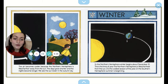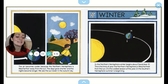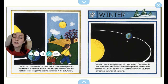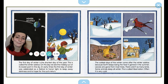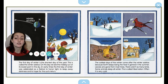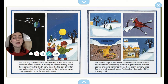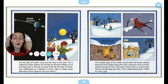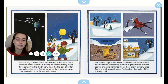Winter. In the northern hemisphere, winter begins about December 21st. This time of year, the northern hemisphere is tilted farthest away from the sun — it is the coldest season of the year. In the southern hemisphere, summer is beginning. The first day of winter is the shortest day of the year — this is called the winter solstice. On this day, we see the midday sun at its lowest point in the sky. In early times, the first day of winter was celebrated as a festival to honor light, to keep away darkness, and to hope for the sun's return. The coldest days of winter come after the winter solstice because earth keeps losing the heat it gained in the summer.